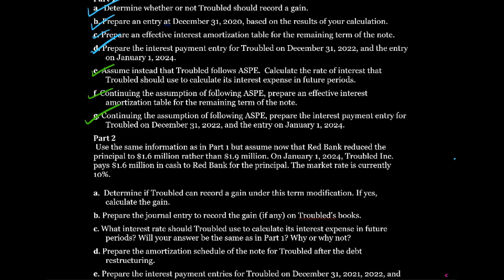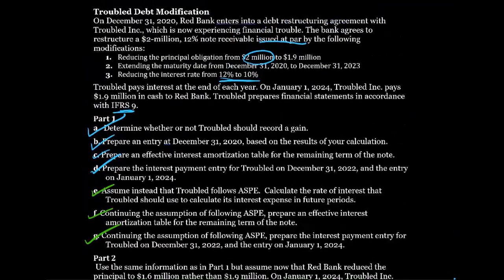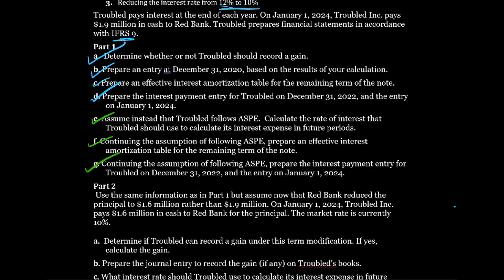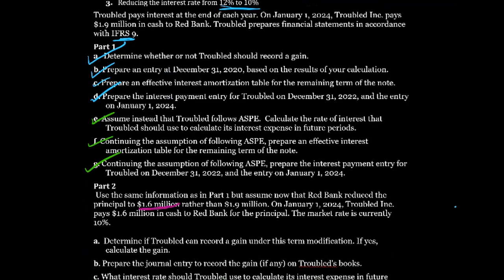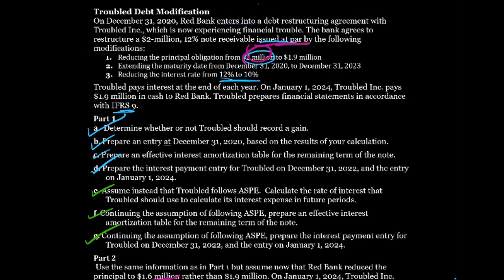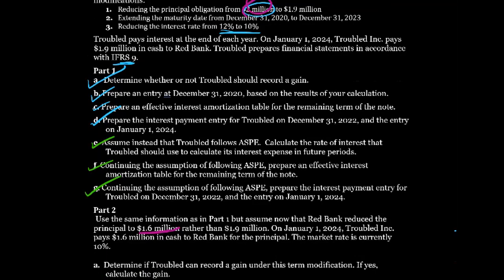The old debt's cash flow stream was $2 million. Now, what are we going to use as our cash flow for the new debt? Red Bank reduced the principal to $1.6 million. Is $1.6 million the present value of the new debt? No, it isn't - that's the face value of the new debt. The reason the $2 million was the present value of the old debt was because it was issued at par. This $1.6 million isn't being issued at par, so we need to figure out what the present value of the new cash flow streams are.